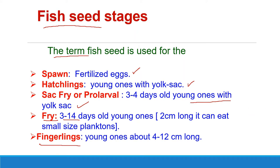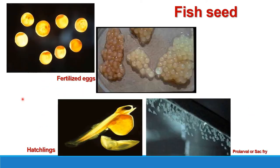Here in this picture, you can see the fertilized eggs — free eggs and sticky type eggs clumped together. This is the figure of a hatchling, just hatched. You can clearly observe it has a yolk sac hanging below from where it draws its nutrition for 2 to 3 days, because it cannot eat from outside as the mouth is not yet formed.